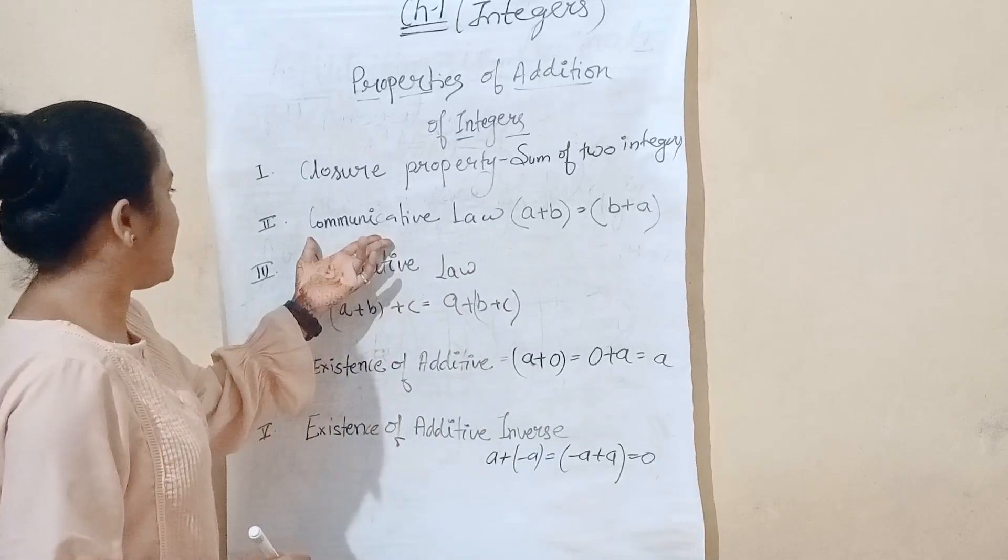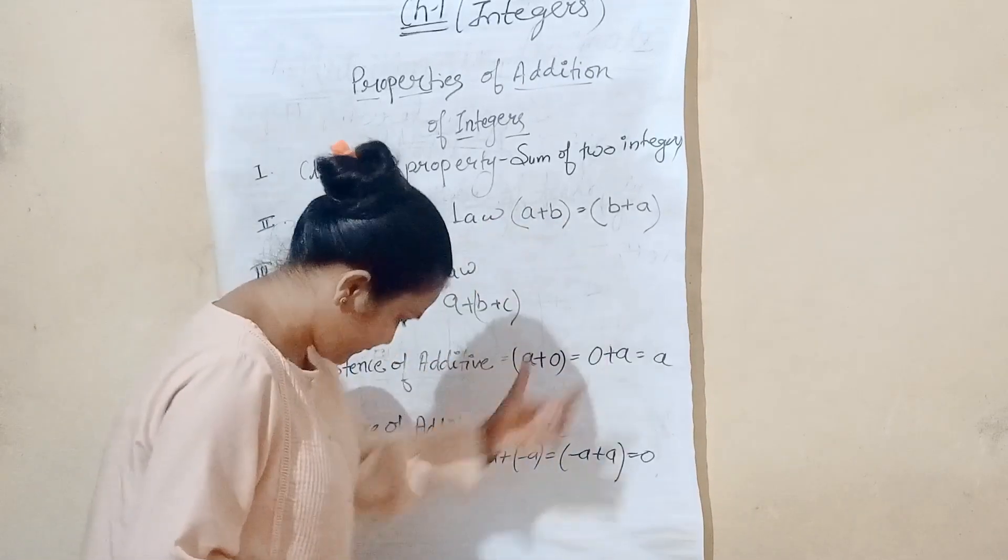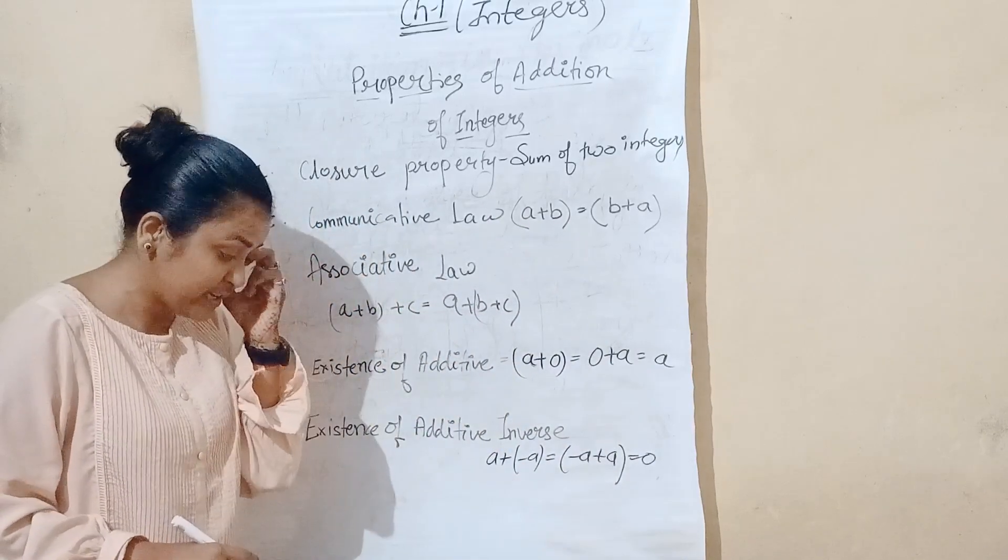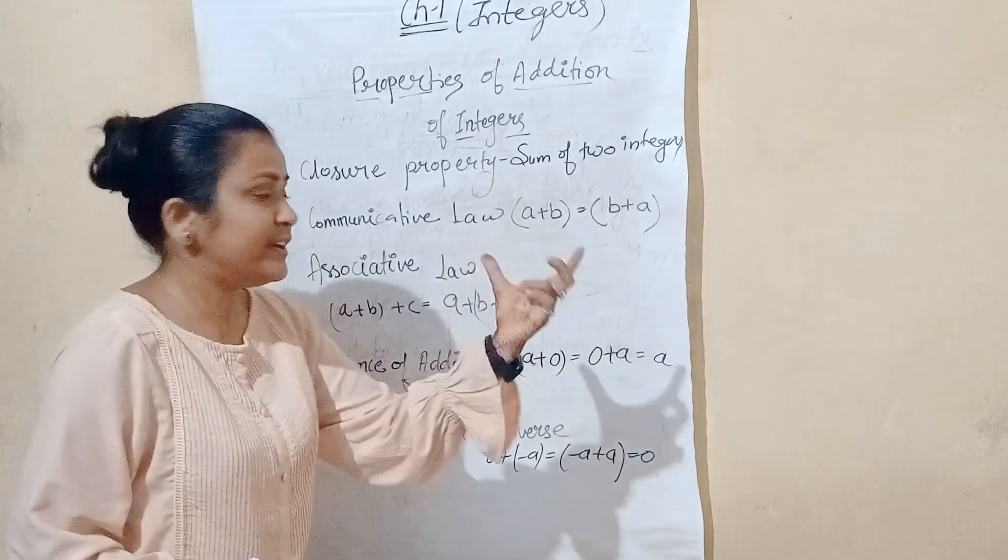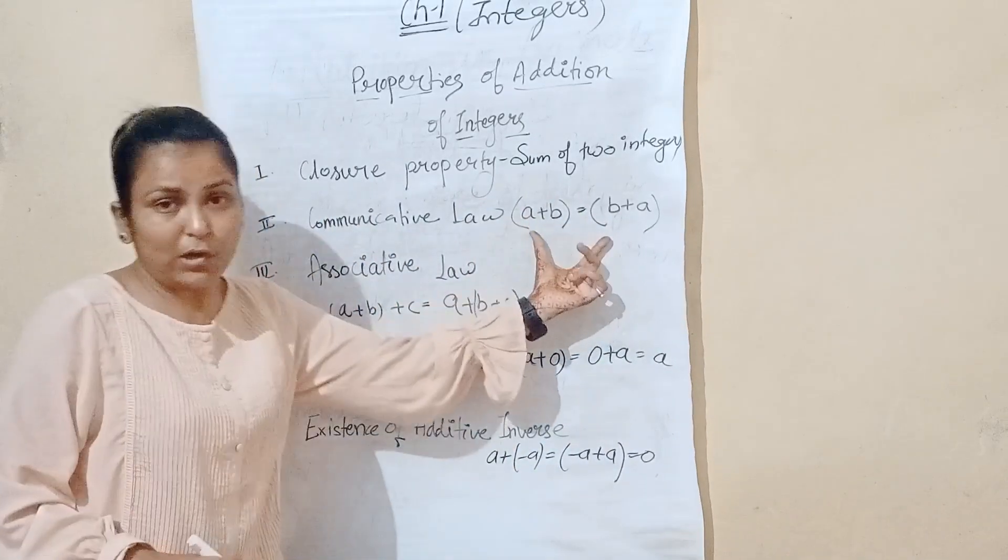The second property is commutative law. If A and B are two integers, then A plus B is equal to B plus A. This is the formula of the commutative law.